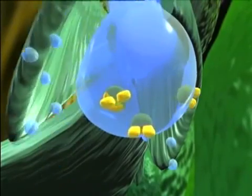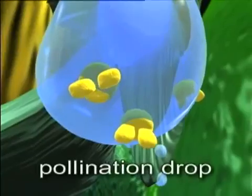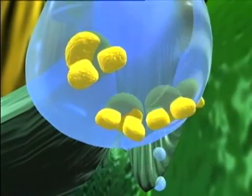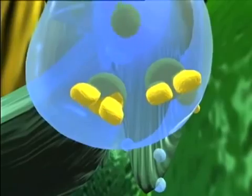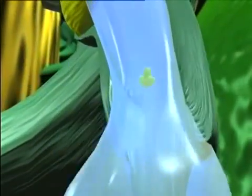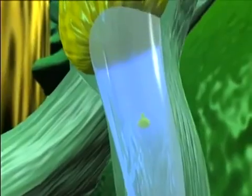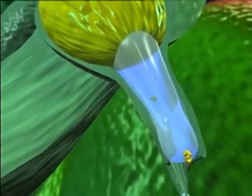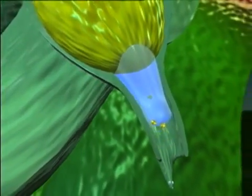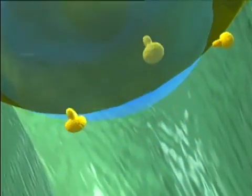The megasporangium now releases a fluid. This is called the pollination drop. As this fills the micropyle, it picks up the pollen grains. The pollination drop soon moves back up the tube, taking the pollen grains to the surface of the megasporangium.